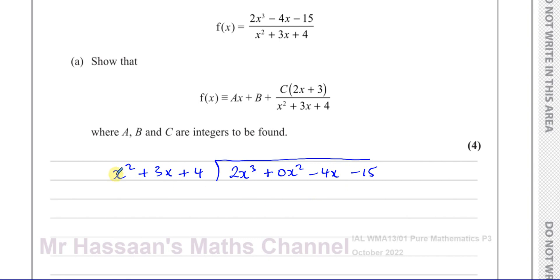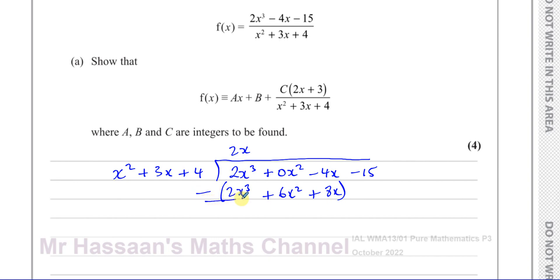Now, x squared goes into 2x cubed 2x times. We multiply 2x with the three terms in the denominator: 2x times x squared is 2x cubed; 2x times 3x is plus 6x squared; 2x times 4 is plus 8x. Then we subtract these two lines. The x cubed terms cancel — 2x cubed minus 2x cubed is 0. Then 0x squared minus 6x squared is negative 6x squared. And negative 4x take away 8x is minus 12x. I bring down the next term which is negative 15.